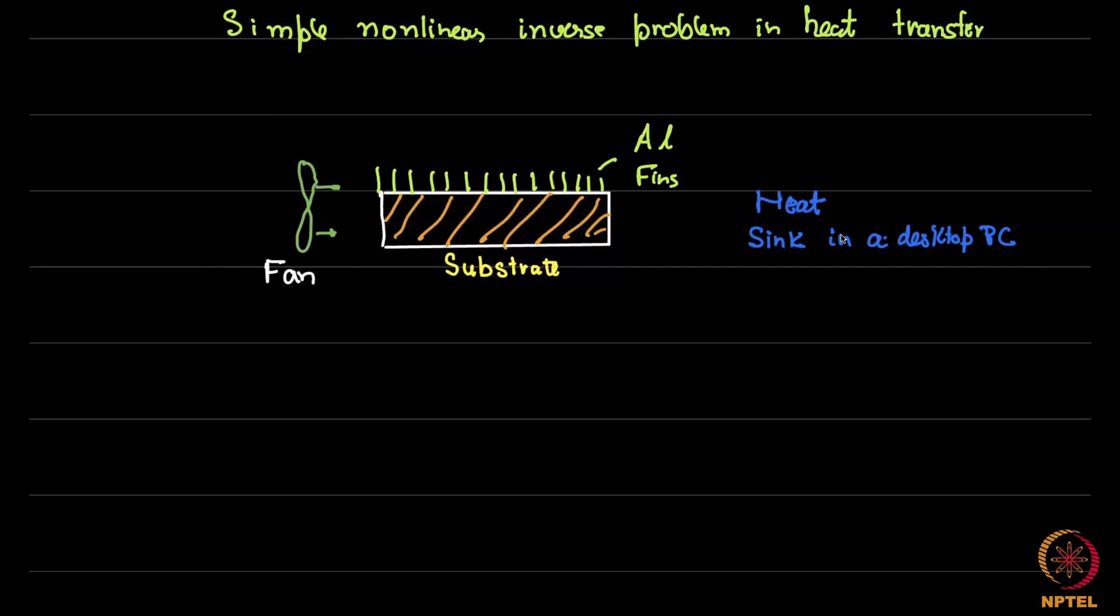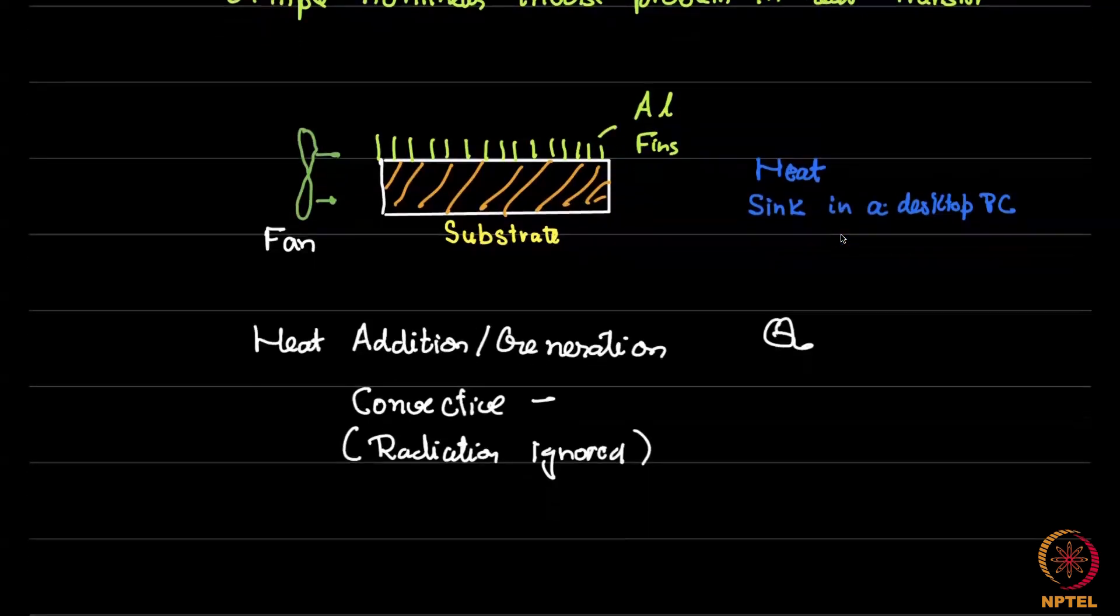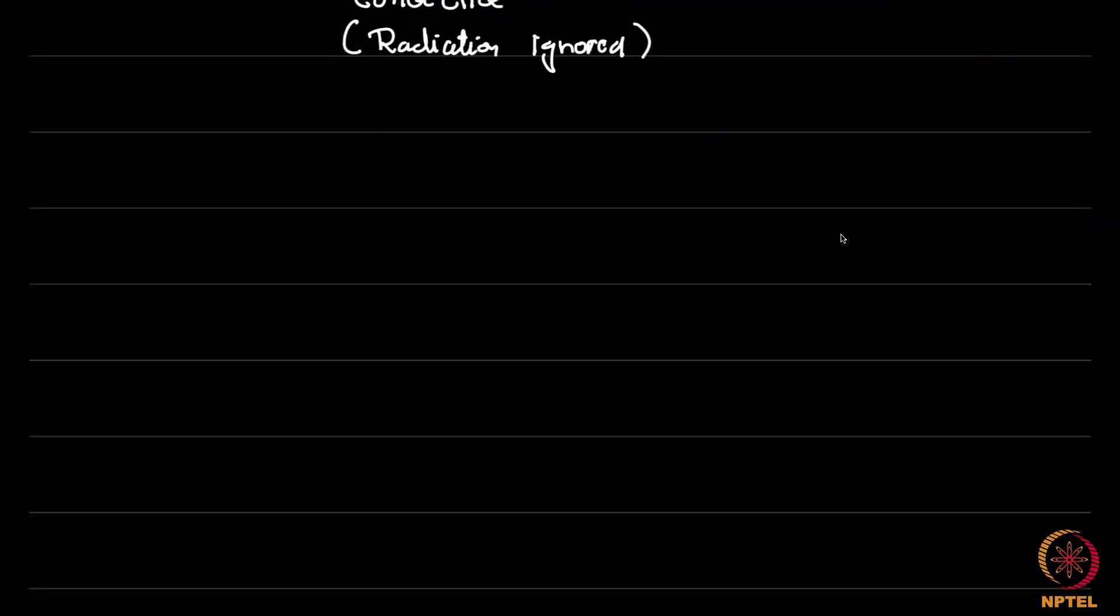Now, if you notice this problem, we will try to abstract it into a simpler problem so that we can make a simple forward model. The full solution involves a full scale thermal modeling of the system. But let's look at a simpler case. So the simpler case is like this. You see the heat transfer modes which are active here. You have heat addition or heat generation. This happens when apps run on your chip and that generates some Q. On the other hand, you have cooling. You have convective cooling. We can ignore something like radiation.